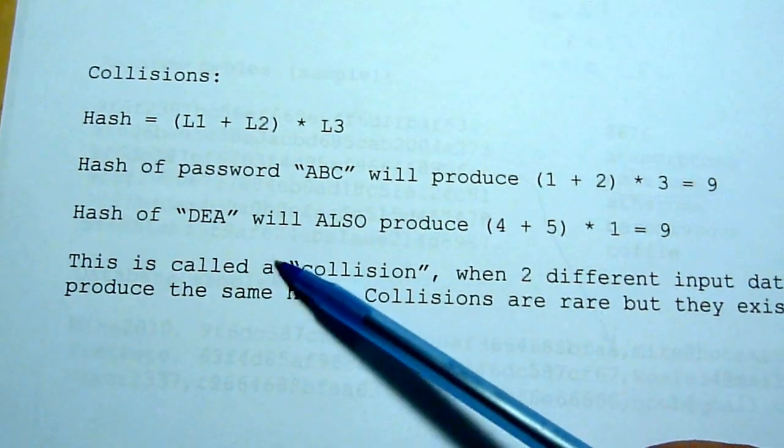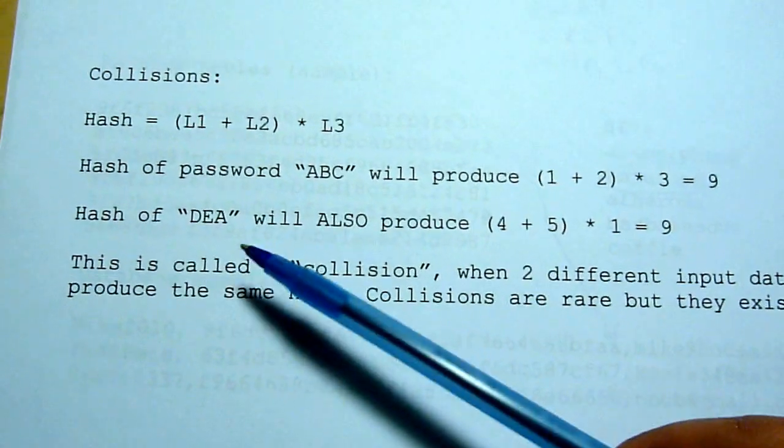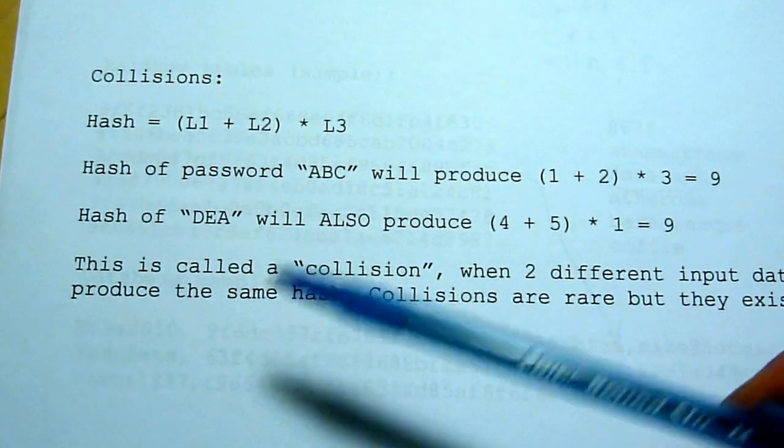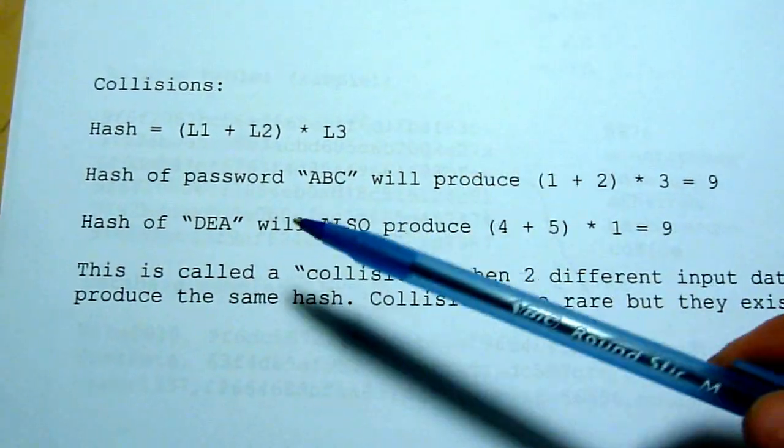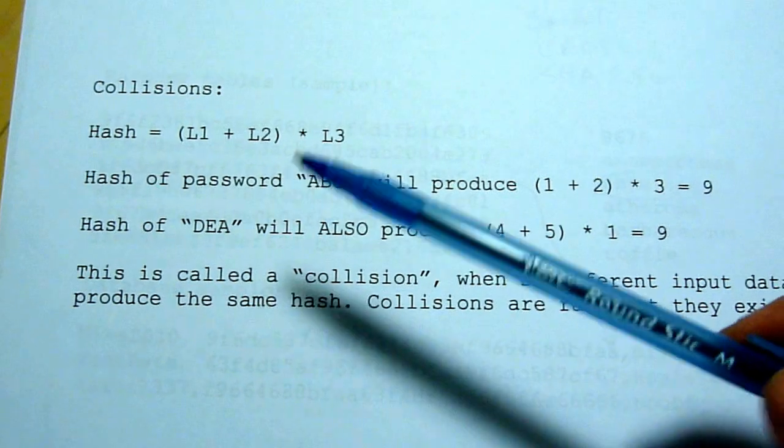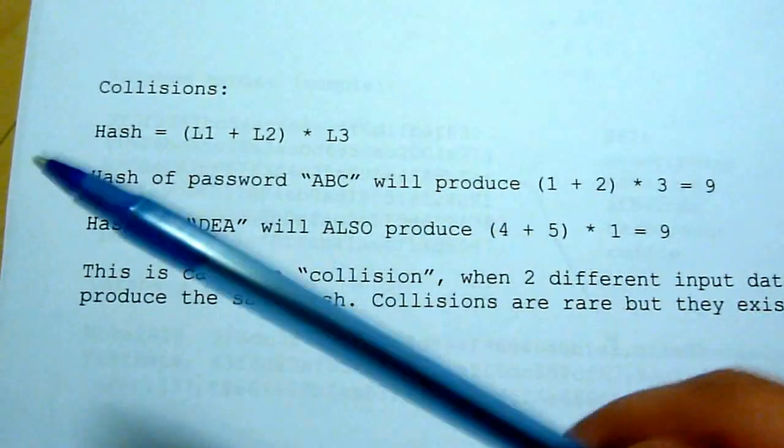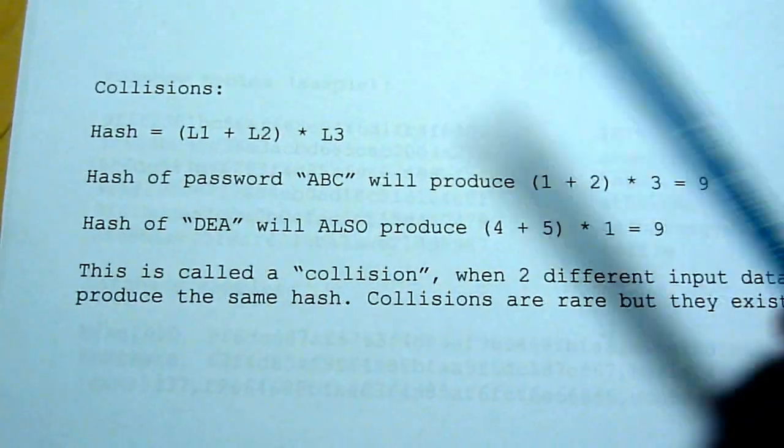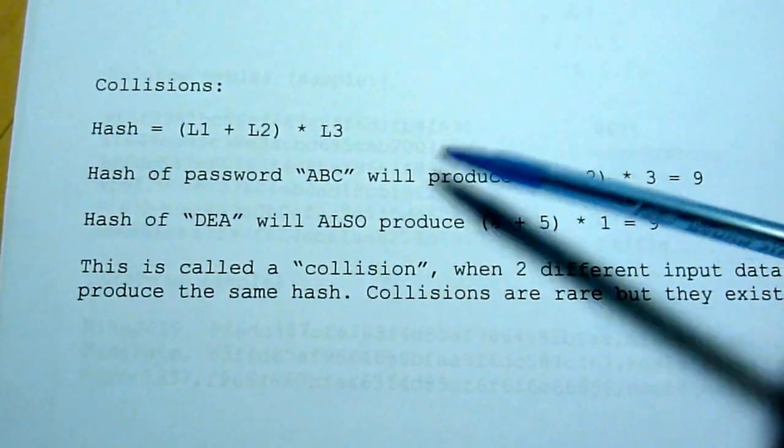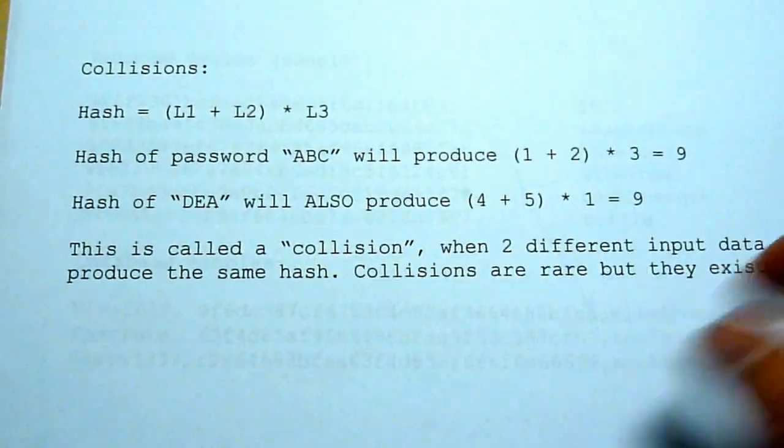Collisions do exist in real algorithms, but the rate of collision is very, very high. So you will have very slim chances. We're talking one in millions of two pieces of data having the same hash because the hash itself, the number is really large.